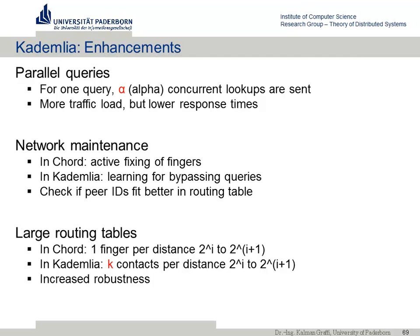One drawback but also benefit of Kademlia is large routing tables: in Chord you have one finger per prefix; in Kademlia you have K contacts per prefix. This is higher cost, but gives better robustness when nodes fail — routing is not interrupted if some routing table entries go offline, since you have K alternatives per prefix.